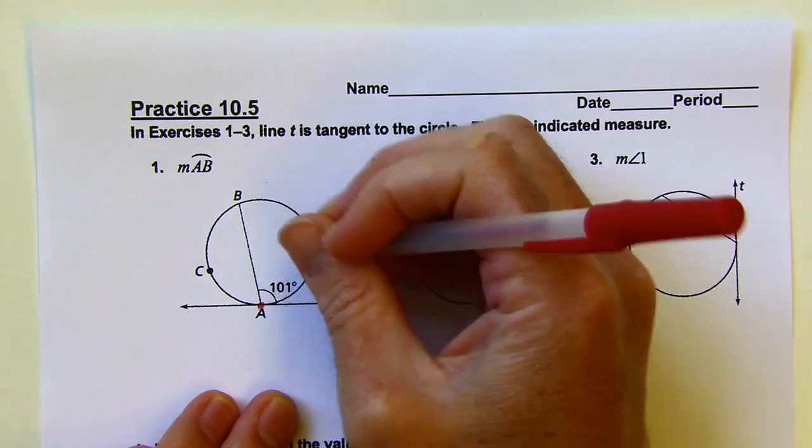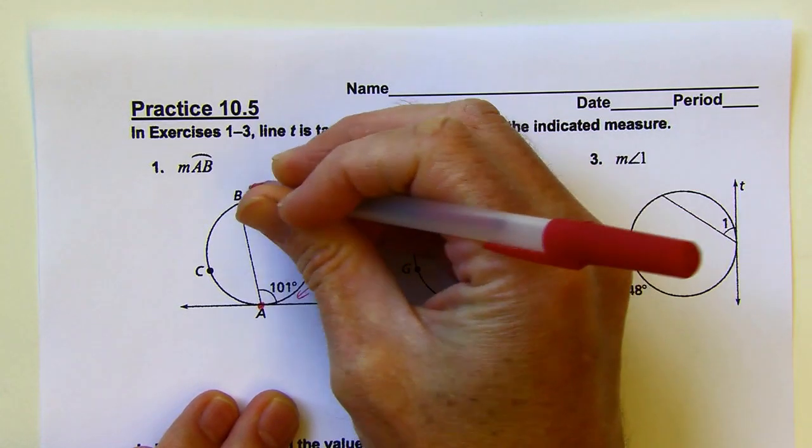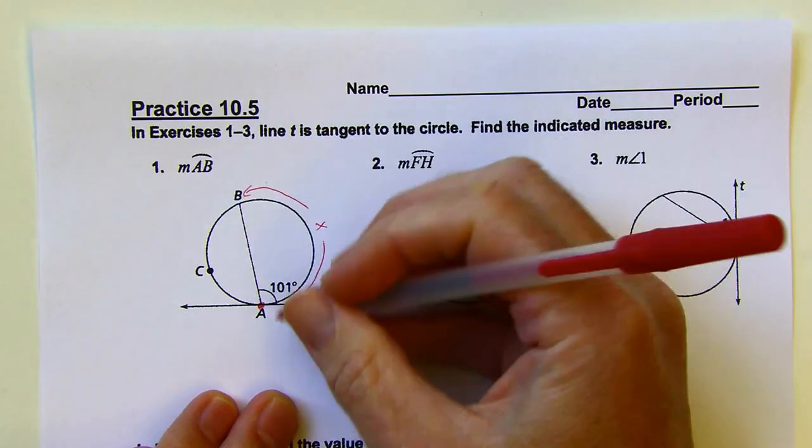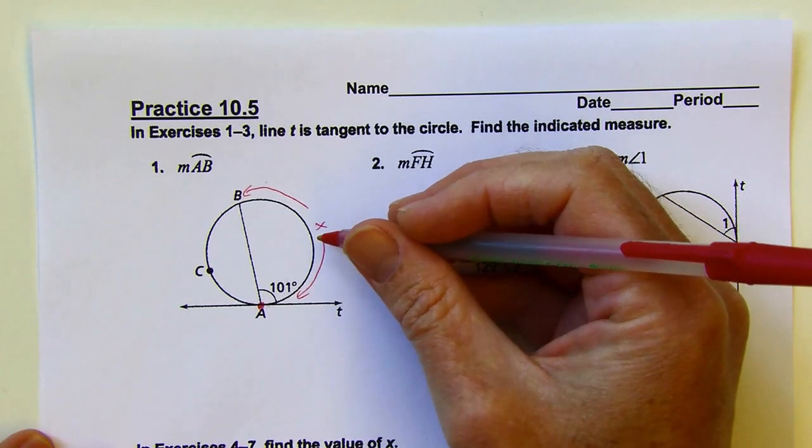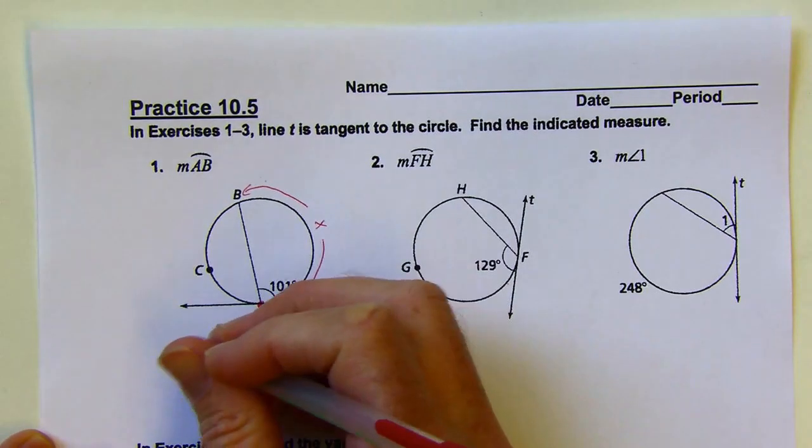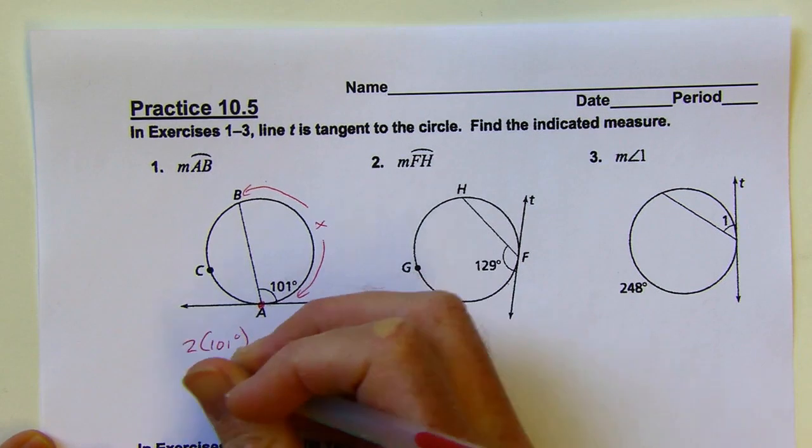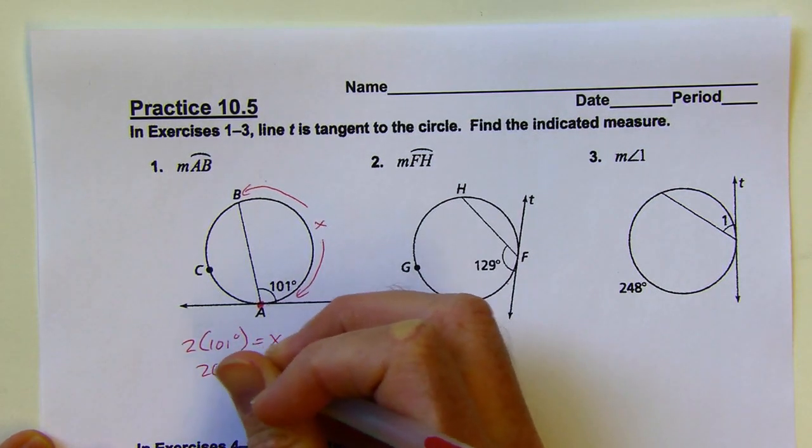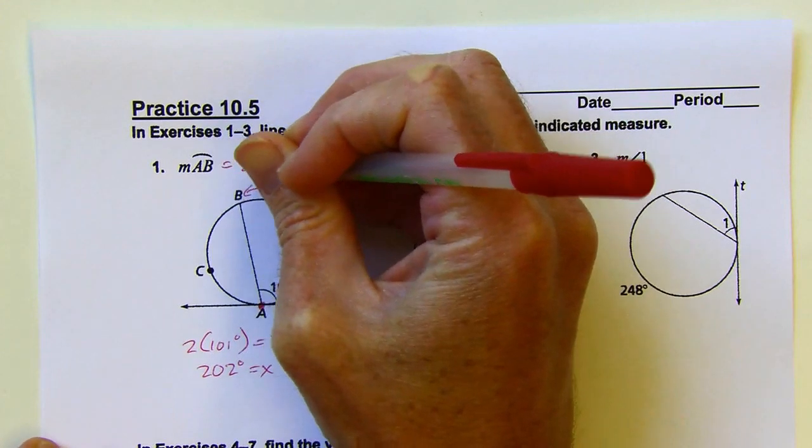They're looking for the measure of this arc. If I double the angle, I'm going to get the measure of the intercepted arc. So I can say 2 times 101 degrees is going to equal X, so that would be 202 degrees. That's the measure of my arc.